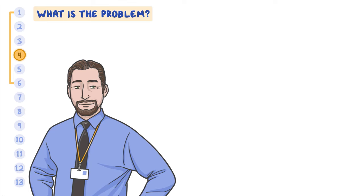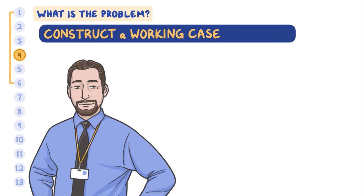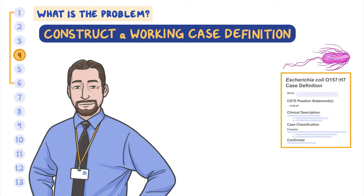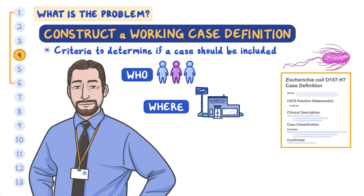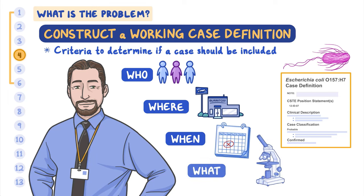Early on, the outbreak investigation team constructs a working case definition. Case definitions can vary based on the purpose of why the cases are being identified. In an outbreak investigation, the case definition is a set of criteria — who (person), where (place), when (time), and what clinical features and laboratory findings — to consider when determining if a case of disease should be included as part of the outbreak being investigated.